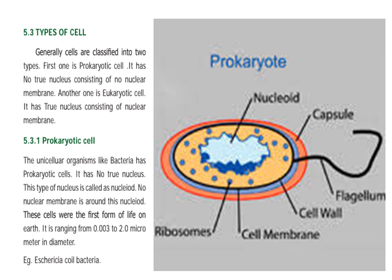Prokaryotic cells have no true nucleus. The nucleus is called a nucleoid — this type of nucleus is called nucleoid, and there is no nuclear membrane around it. These cells were the first form of life on Earth, ranging from 0.003 to 2.0 micrometers in diameter.